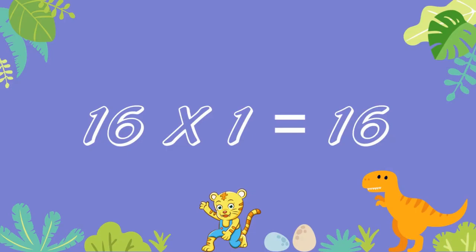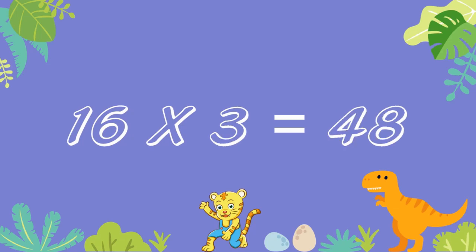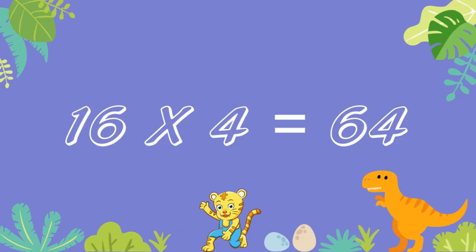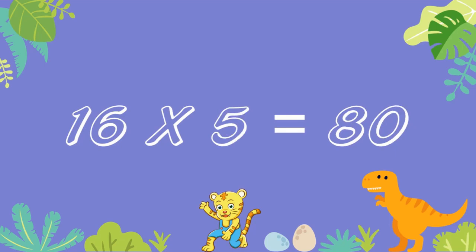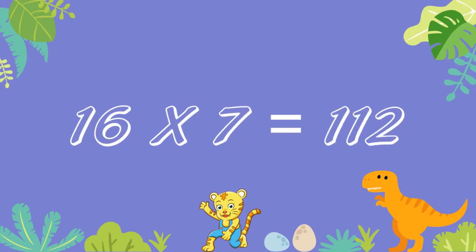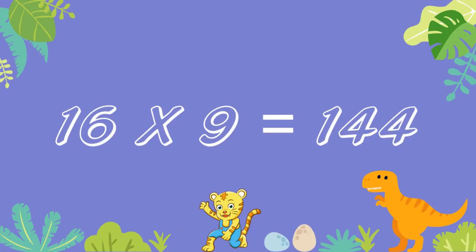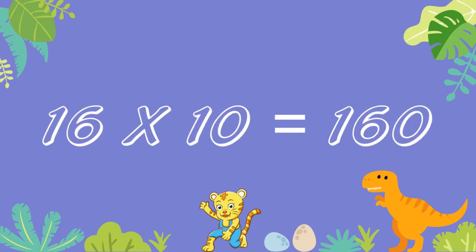Table of 16. Sixteen ones are 16. Sixteen twos are 32. Sixteen threes are 48. Sixteen fours are 64. Sixteen fives are 80. Sixteen sixes are 96. Sixteen sevens are 112. Sixteen eights are 128. Sixteen nines are 144. Sixteen tens are 160.